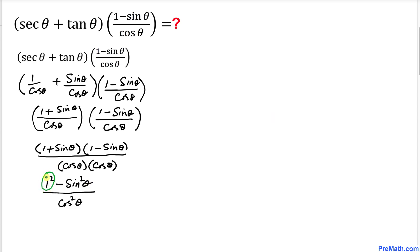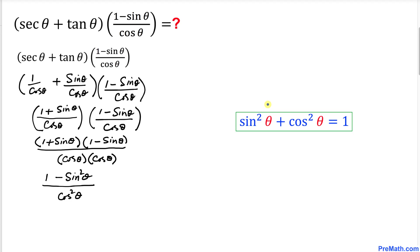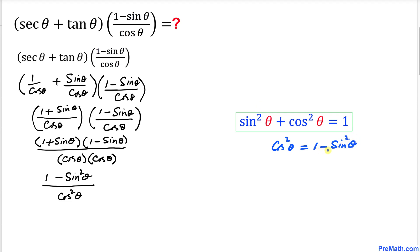1² is simply 1. Now let's recall the famous Pythagorean identity: sine²θ + cos²θ = 1. I'm going to manipulate this identity by moving sine²θ to the other side, which gives us cosine²θ = 1 minus sine²θ.